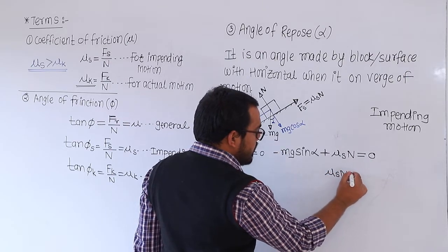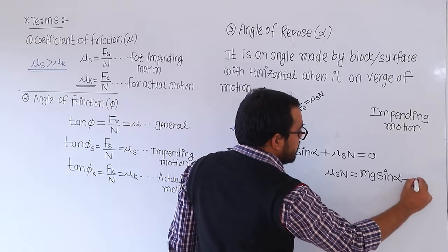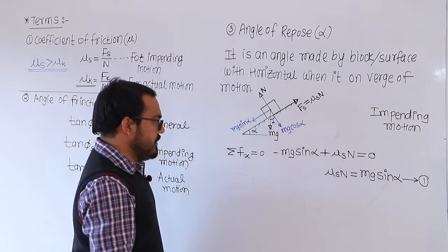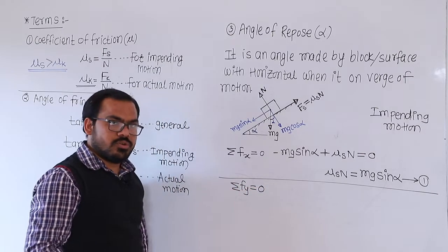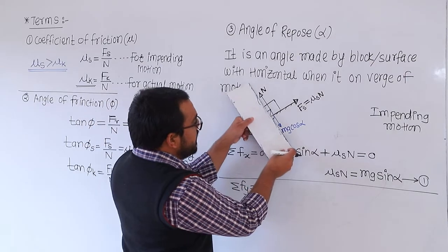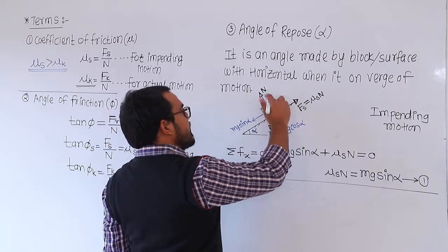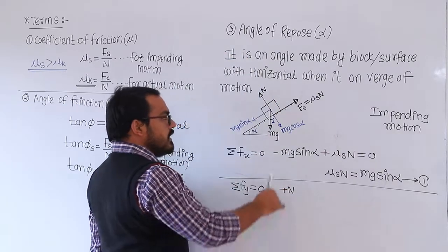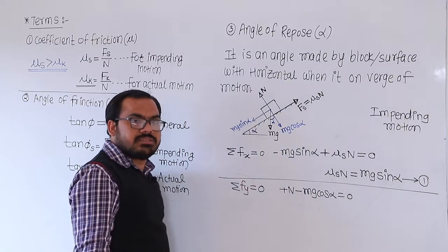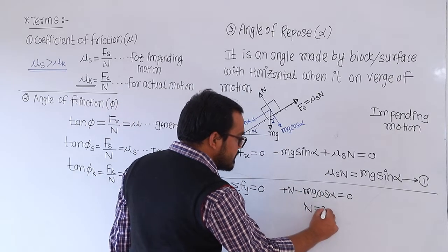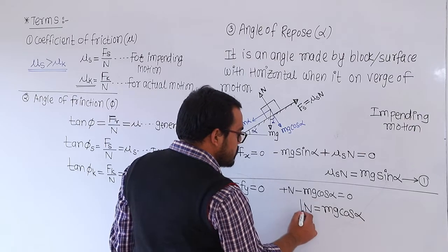From this, mu_s into normal reaction equals mg sin alpha. This is equation number one. For equation number two, summation of forces along the y-direction — perpendicular to the plane — equals zero. Normal reaction N acting upward (positive) minus mg cos alpha equals zero. Therefore, the normal reaction N equals mg cos alpha.